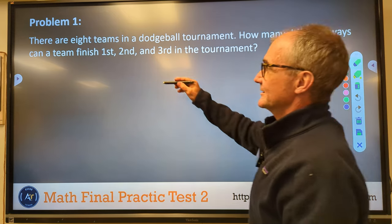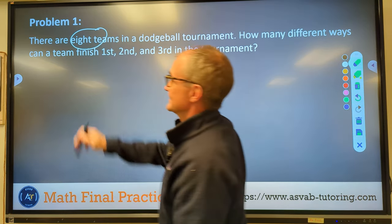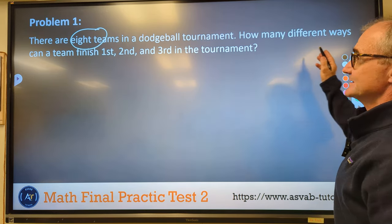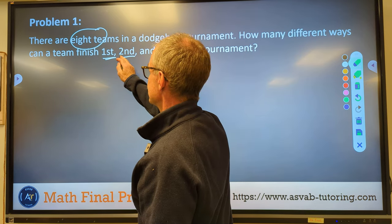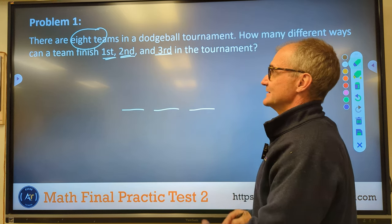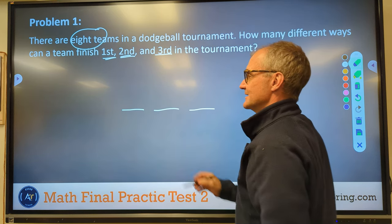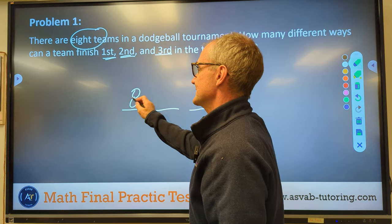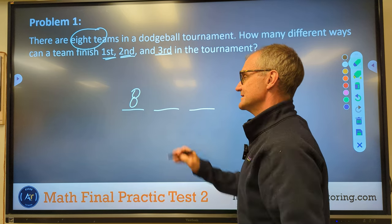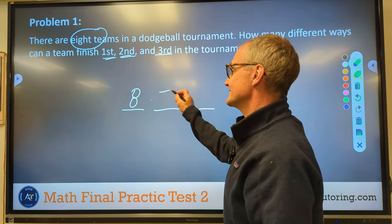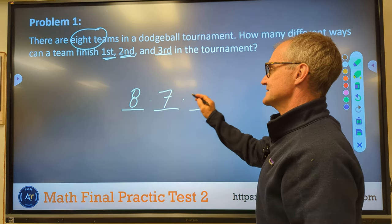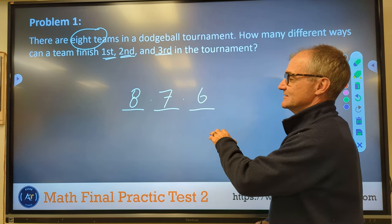Problem number one, there are eight teams in a dodgeball tournament. How many different ways can finish first, second and third? So that means I have three slots right here. How many teams could finish in this first spot? Well there is a total of eight, so any one of them could finish first. After one of them finishes in first place, now there's only seven teams left to finish in second place and then there's only six teams that could finish in third place.